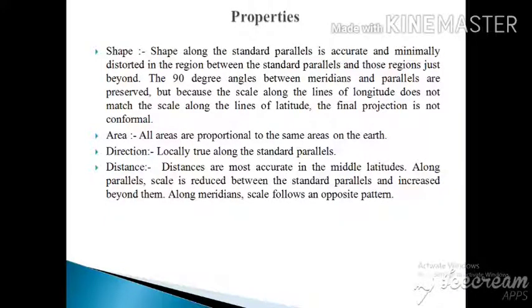The projection is accurate and minimally distorted in the region between the standard parallels and those regions just beyond. Second: area - all areas are proportional to the same areas on the earth. Third: direction - locally true along the standard parallels. Fourth: distance - distances are most accurate in the middle latitudes along parallels. Scale is reduced between the standard parallels and increased beyond them.